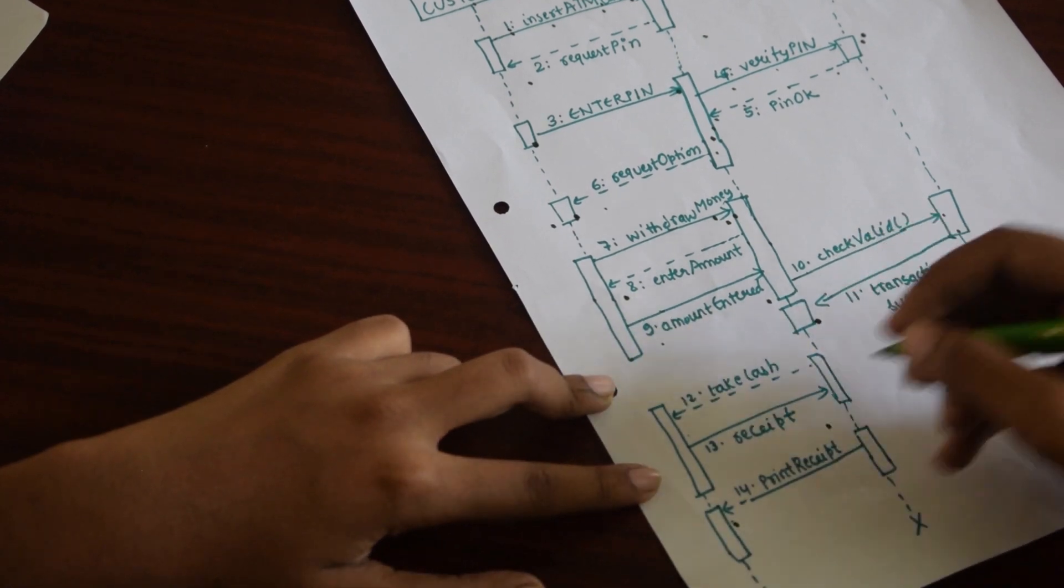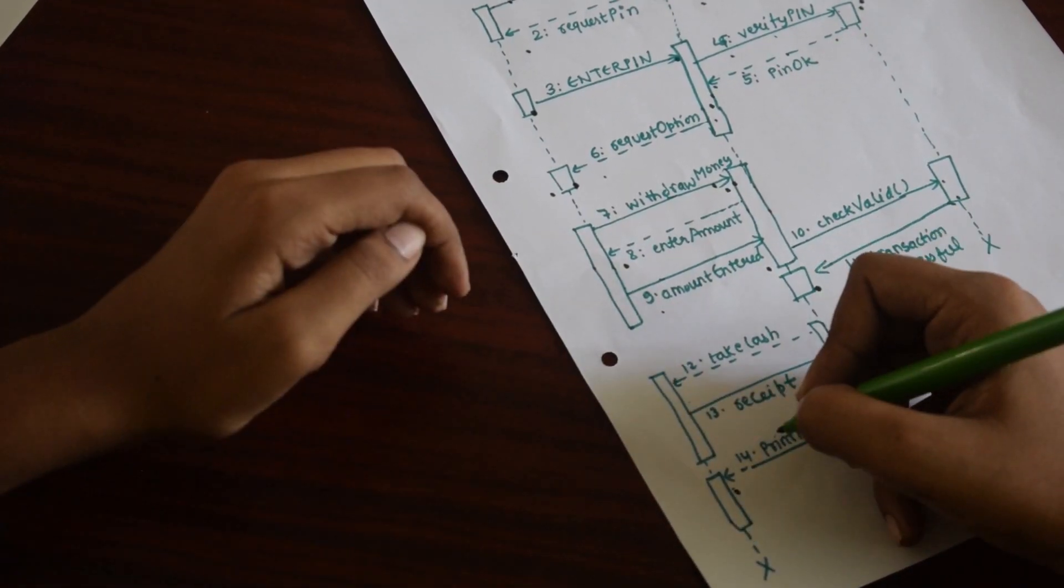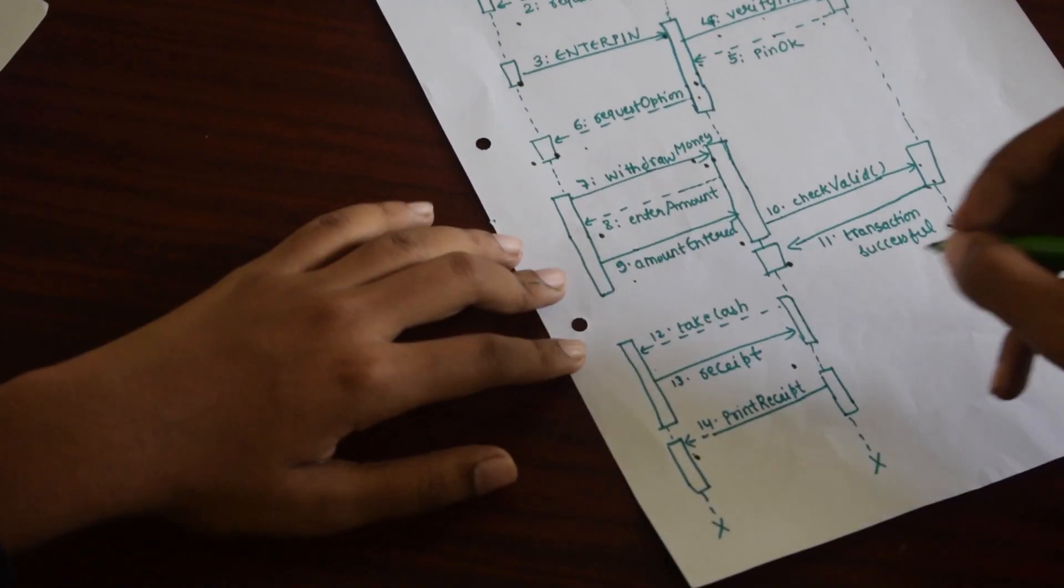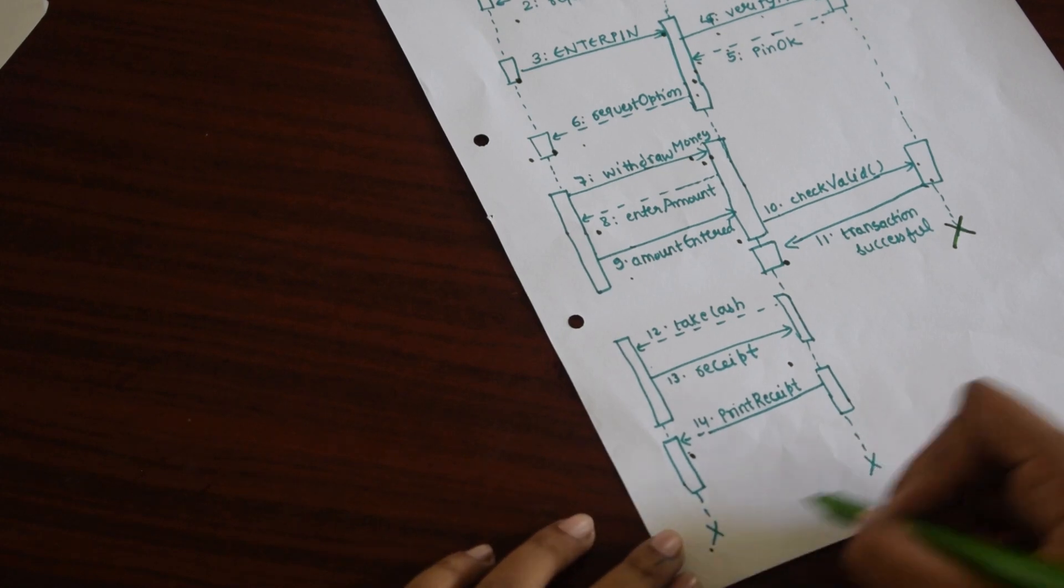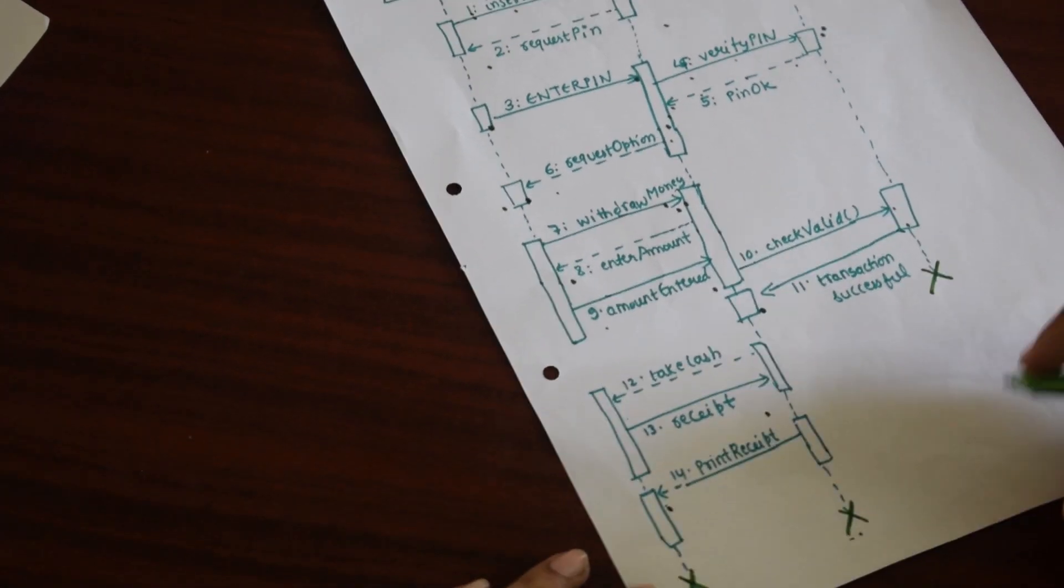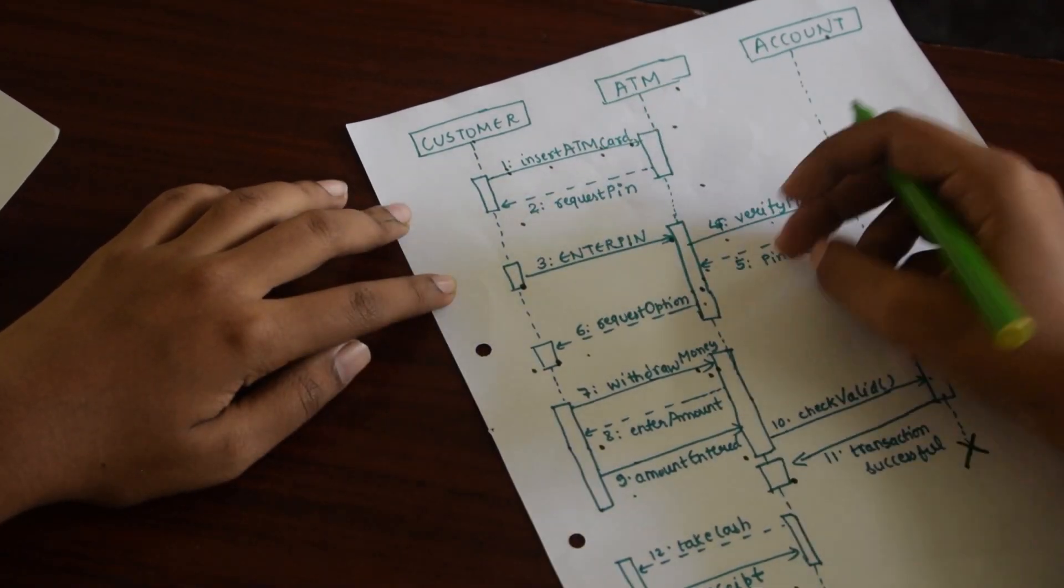Like cash or receipt print, account is not needed. So, it has been destroyed. But at the end, everything is destroyed because now it is not needed and our activity is performed. So, this 1, 2, 3, 4, this is all denoting a sequence.